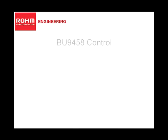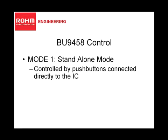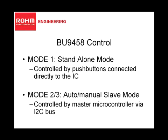This chip can be controlled in two ways. The first is in a standalone mode, hereon referred to as Mode 1. This mode allows the user to control the function of the chip by using pushbuttons connected directly to the IC. The second is by means of an I2C bus when connected to the master microcontroller, set in one of its slave modes, hereon referred to as Modes 2 and 3. We will be using this device in Modes 2 and 3 for this demonstration.